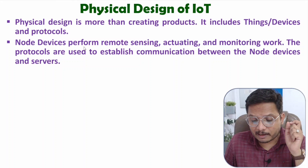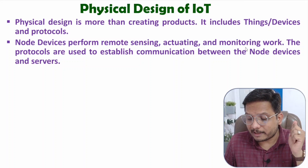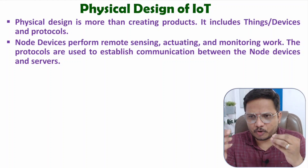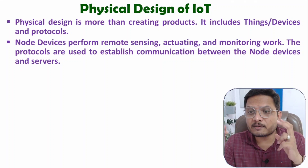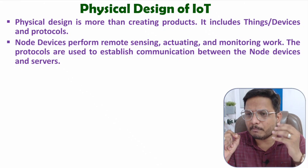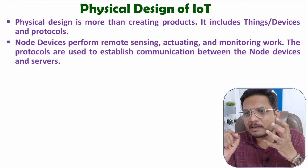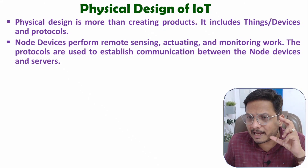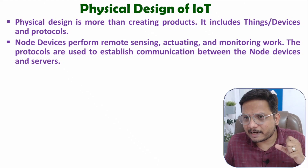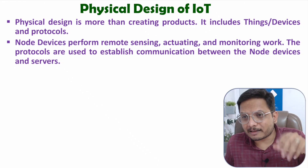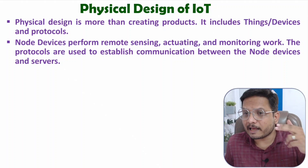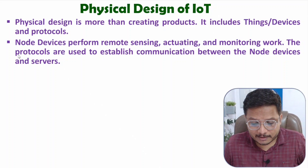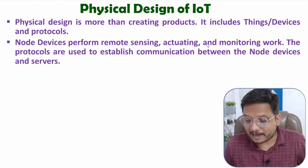Node devices will be performing remote sensing, actuating and monitoring work. In node devices, you will be using sensors and actuators. Sensors are used to sense physical elements like temperature, moisture, or sound — it depends on the application. Sensing is the essential part. Once you sense the data, we need to monitor the work. Once you monitor the work, you will have to take actions. Actions are taken with the use of actuators. So node devices will be performing remote sensing, actuation and monitoring work.